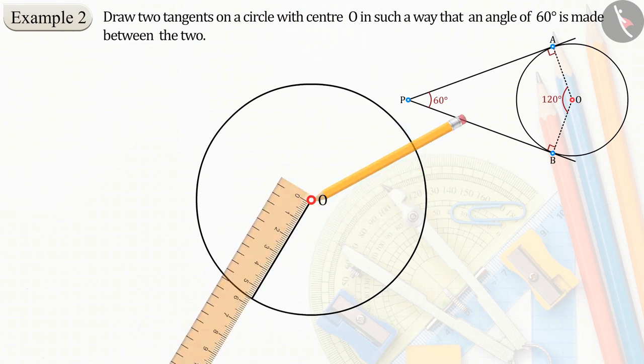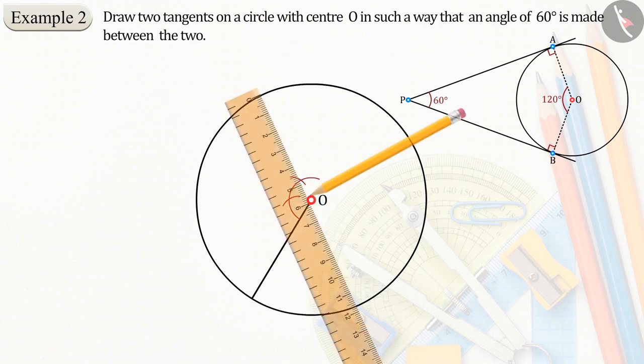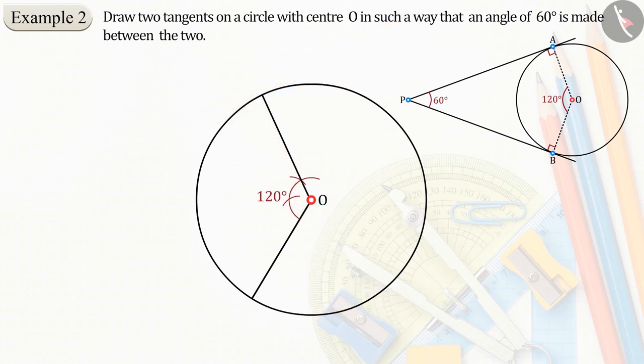Now draw two radii, OA and OB, making an angle of 120 degrees. Now the tangent lines passing through these two points A and B have to be drawn.